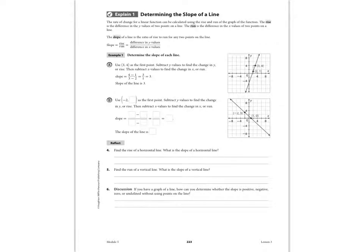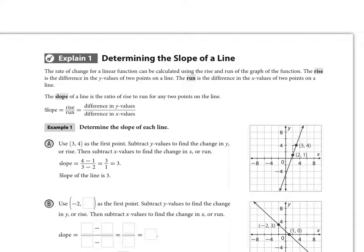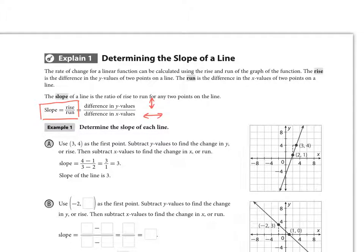On page 223, it starts to talk about the concept of slope on a linear equation when we're looking at a graph. Slope is the rise over run. Rise has to do with the y value — how far it goes up or down. Run has to do with the x value — how far it goes left and right.